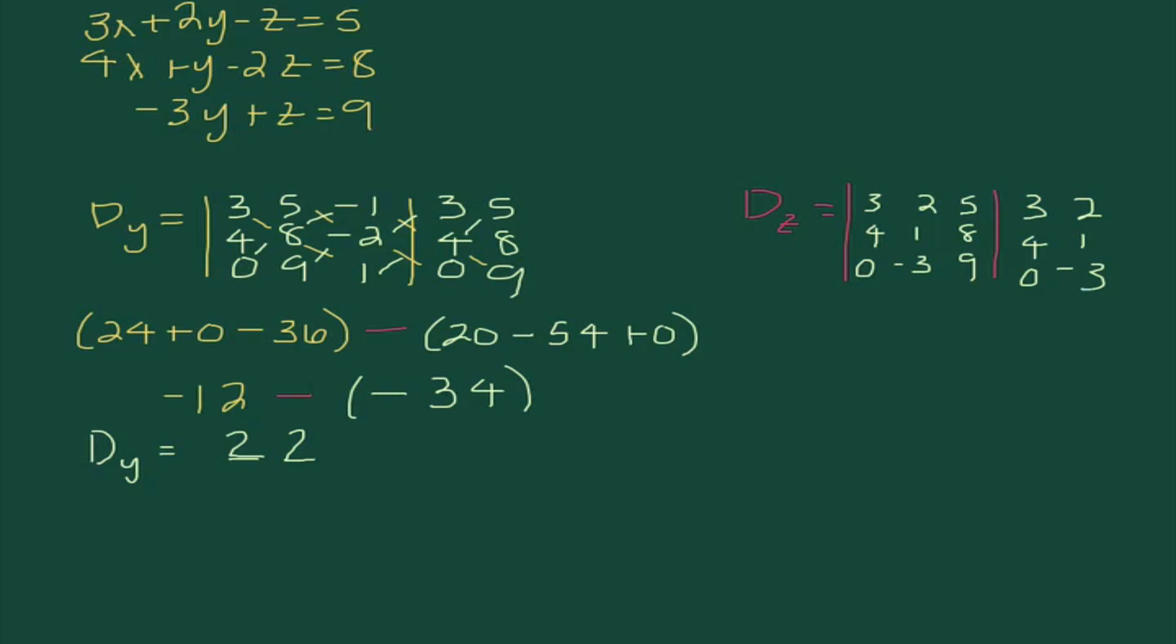So, here we go. So, 3 times 1 times 9 is 27. 2 times 8 times 0 is 0. 5 times 4 times negative 3 becomes negative 60. Minus 2 times 4 times 9 is 72. 3 times 8 times negative 3 becomes minus 72. And, lastly, I get another 0. So, when I combine these, I get negative 33 minus 0, which is D sub Z equals negative 33.